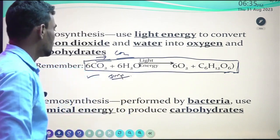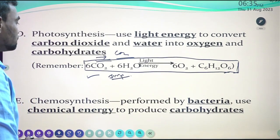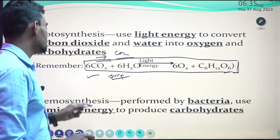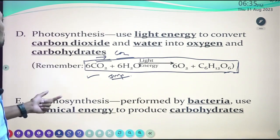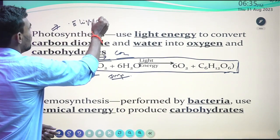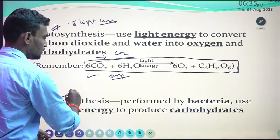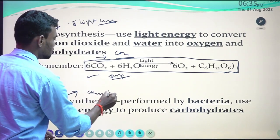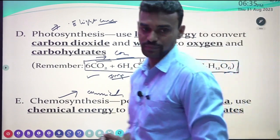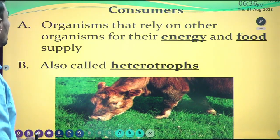The next one is chemosynthesis, performed by bacteria, which use chemical energy to produce carbohydrates. It is totally different from photosynthesis — in photosynthesis a source of light is used, but in the case of bacteria, chemicals are used to produce carbohydrates as the important source of energy.